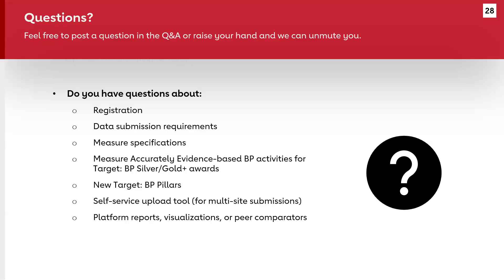Another question: do you allow fructosamine levels for patients who have a medical condition making A1C unreliable? For this measure, it doesn't allow fructosamine levels for the numerator. However, the patient might fall under exclusion criteria if they have a medical condition — there's a category called advanced illness covering a range of conditions — and it's very possible such a patient might be excluded from the measure so you don't get penalized unnecessarily for not having an A1C when they really wouldn't need one.